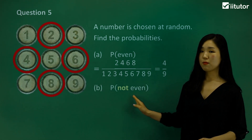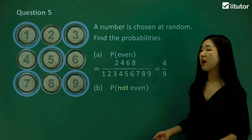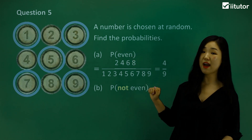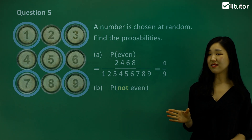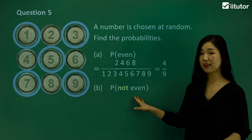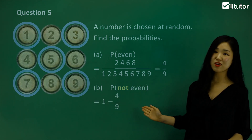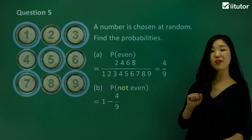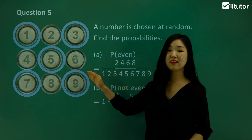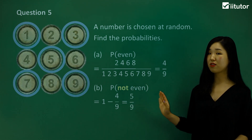Now not even — the probability of not being even. If you look at the diagram, it's pretty much 1, 3, 5, 7, and 9 that are the non-even ones, so it's the remaining 5. But instead of counting them up, let's try the complementary event rule. The probability of not even is 1 minus the probability of even. So 1 minus 4/9 simply becomes 5/9. And as we just counted, it's exactly 5 out of 9 — exactly the same probability.